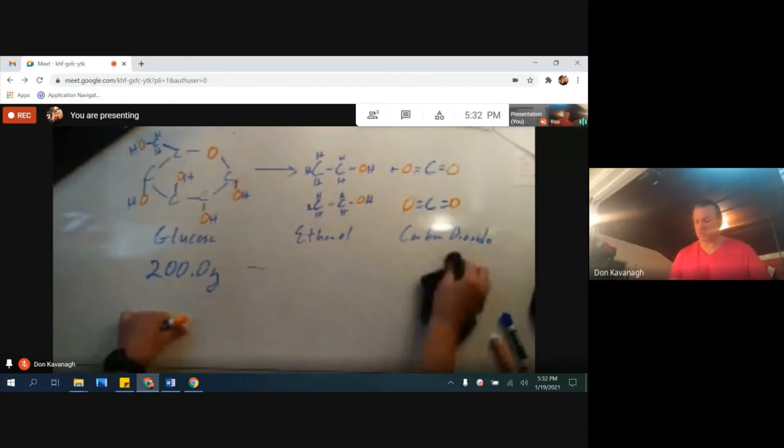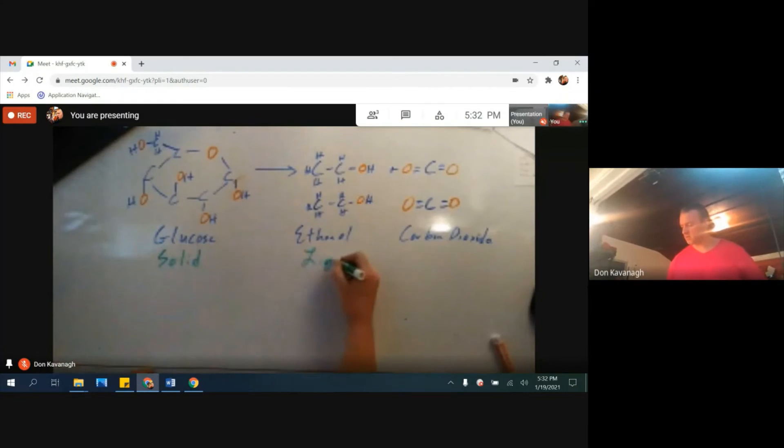Now, these products and reactants here, glucose is a solid sugar. Ethanol is going to be a liquid. Let's assume this thing is going on at room temperature. So if we were running this at very hot temperatures, maybe that liquid could boil into vapor. But right now, let's say at room temperature, ethanol is going to be a liquid, glucose is going to be a solid, carbon dioxide is going to be a gas at room temperature.